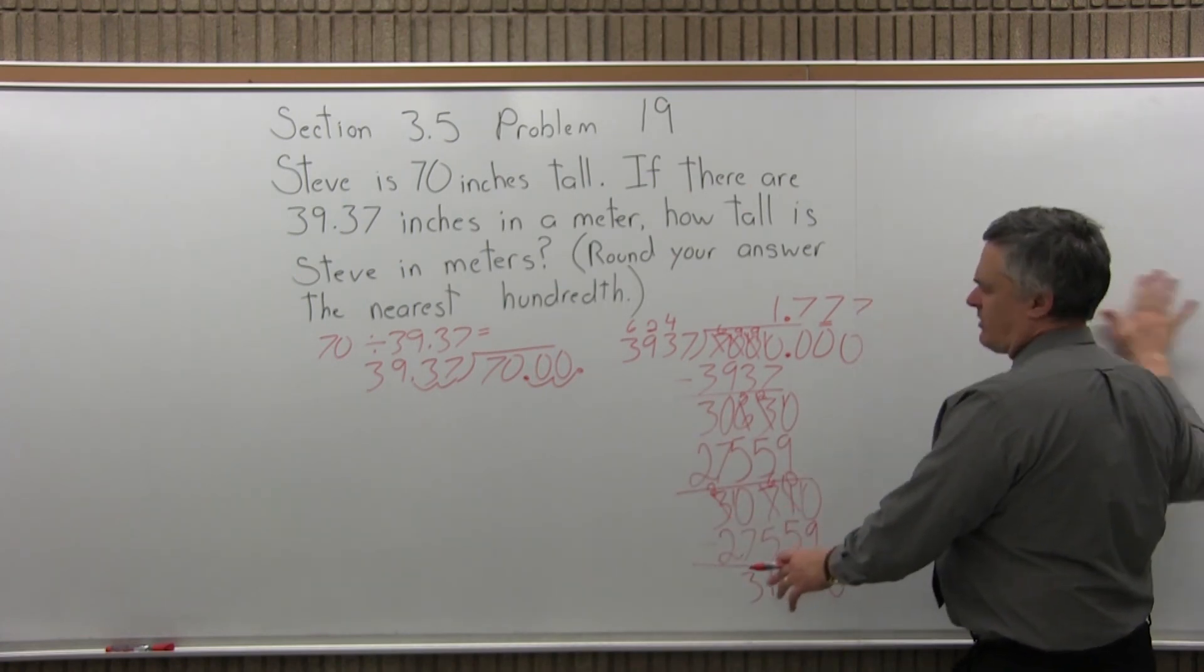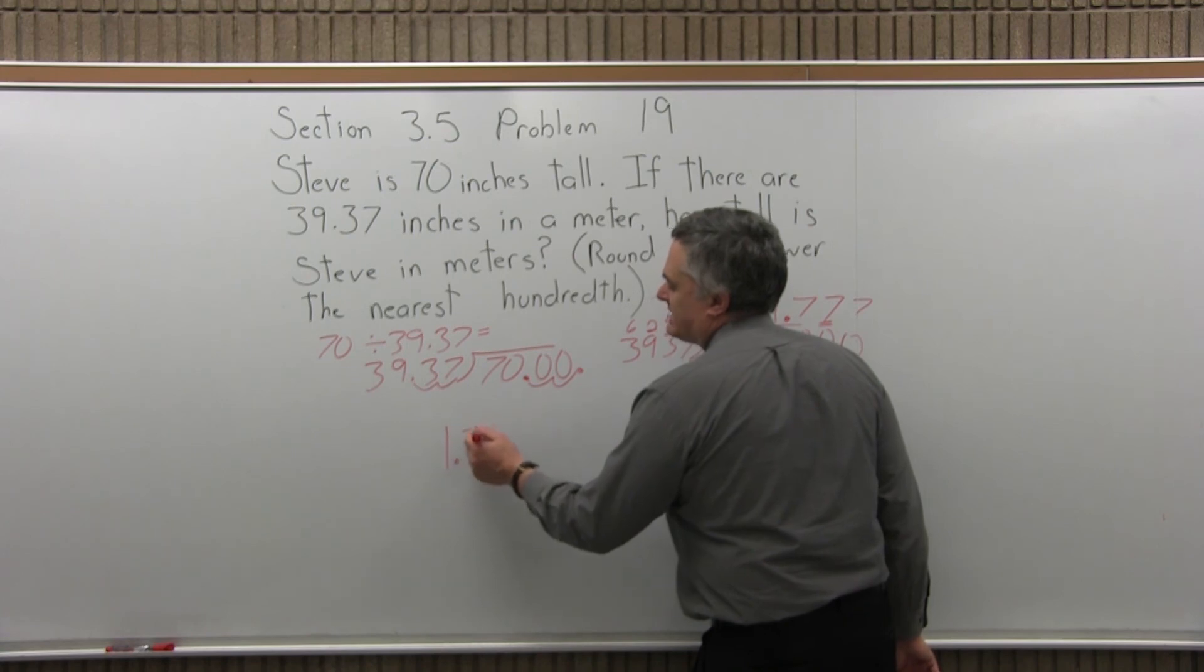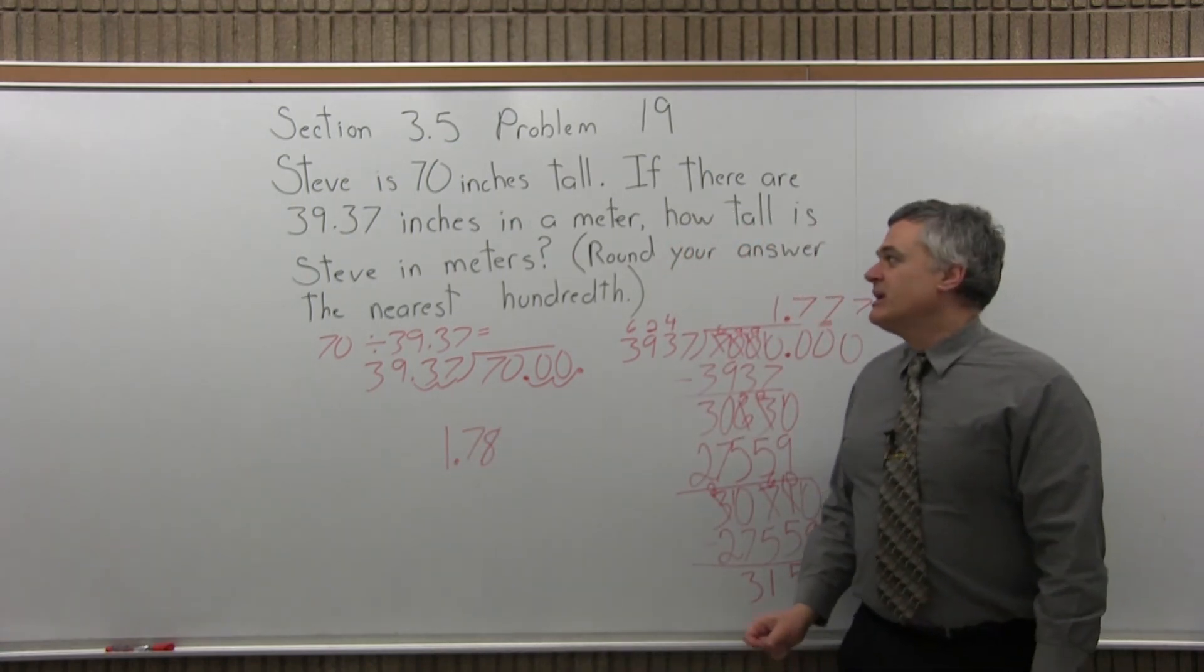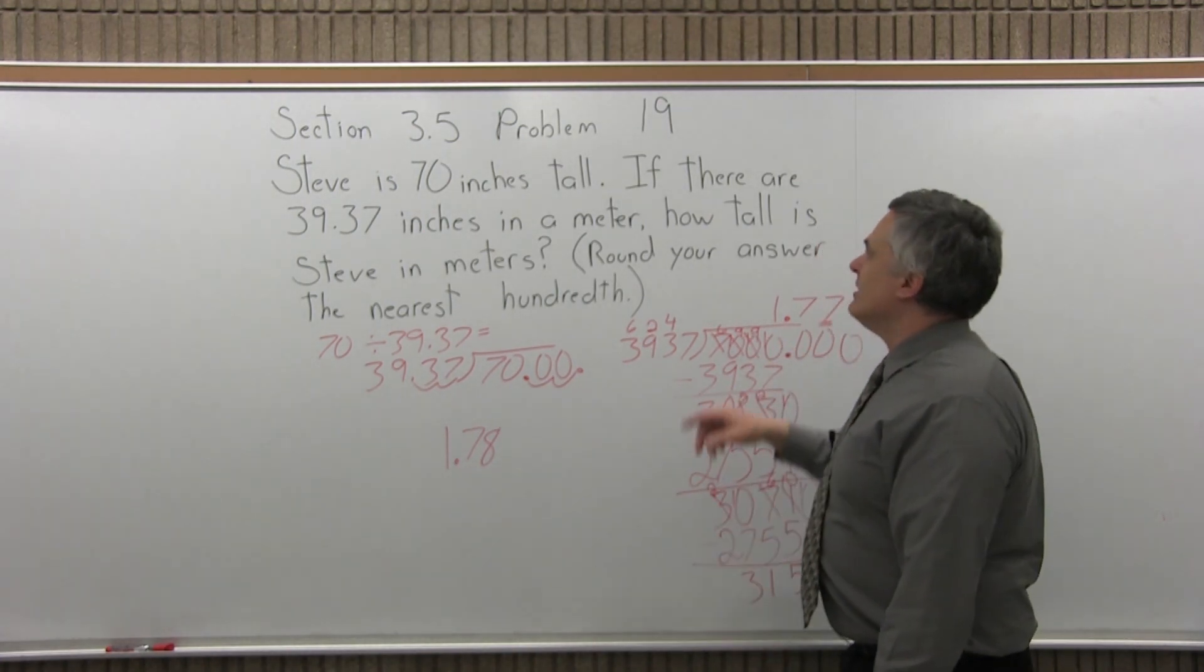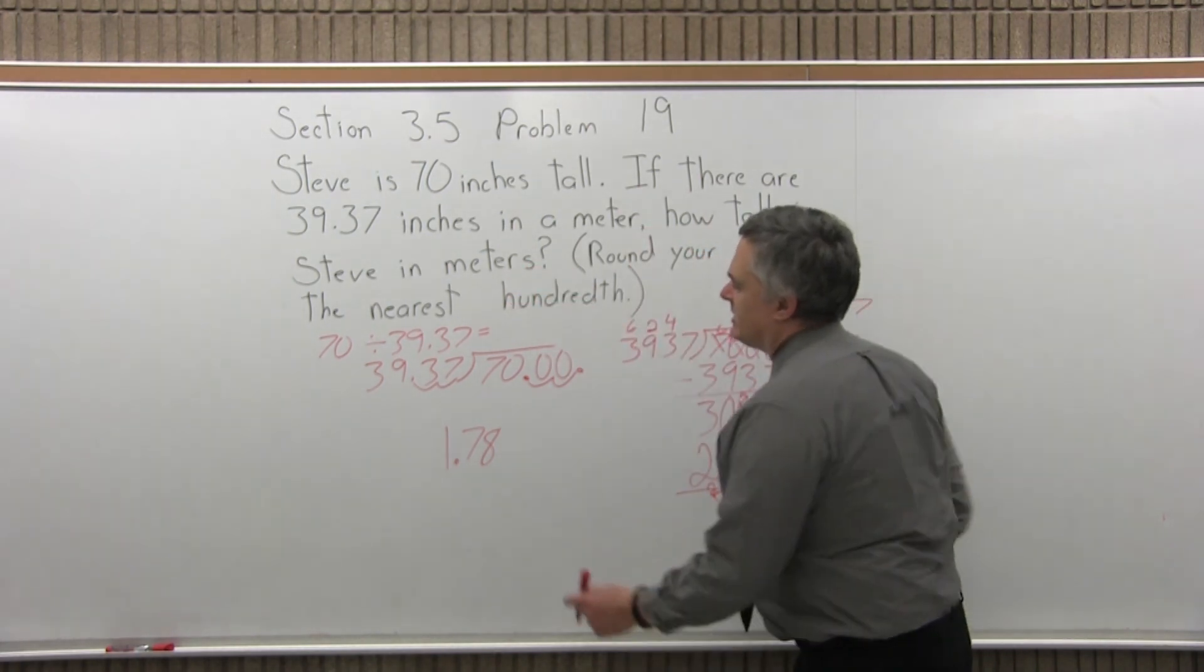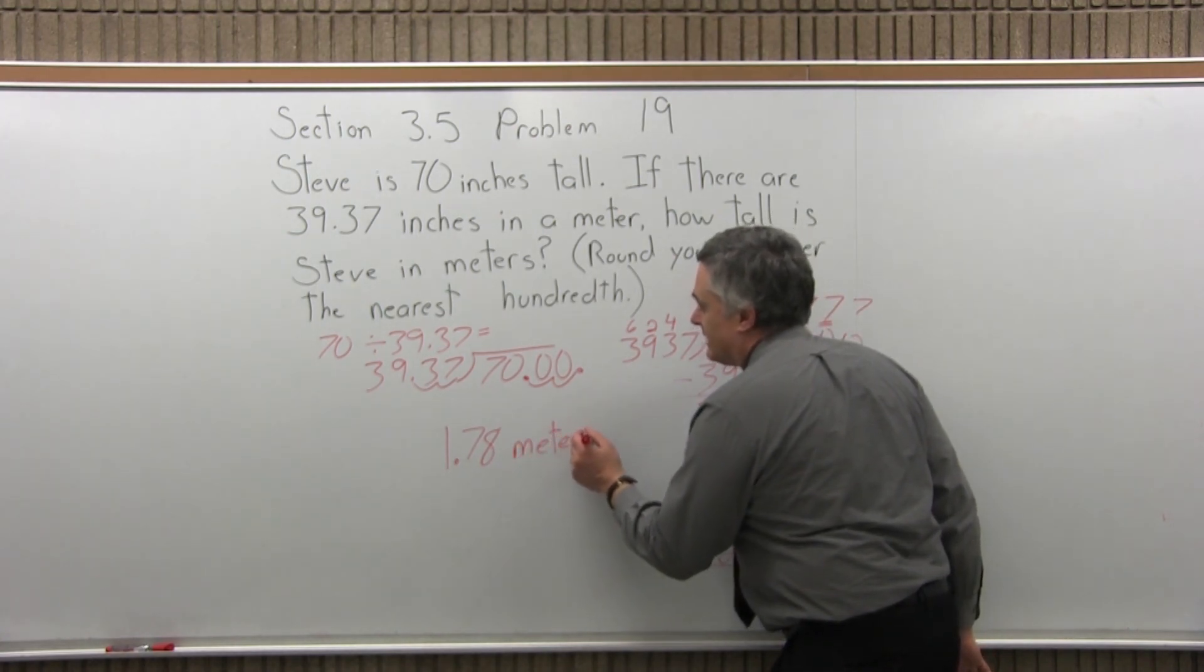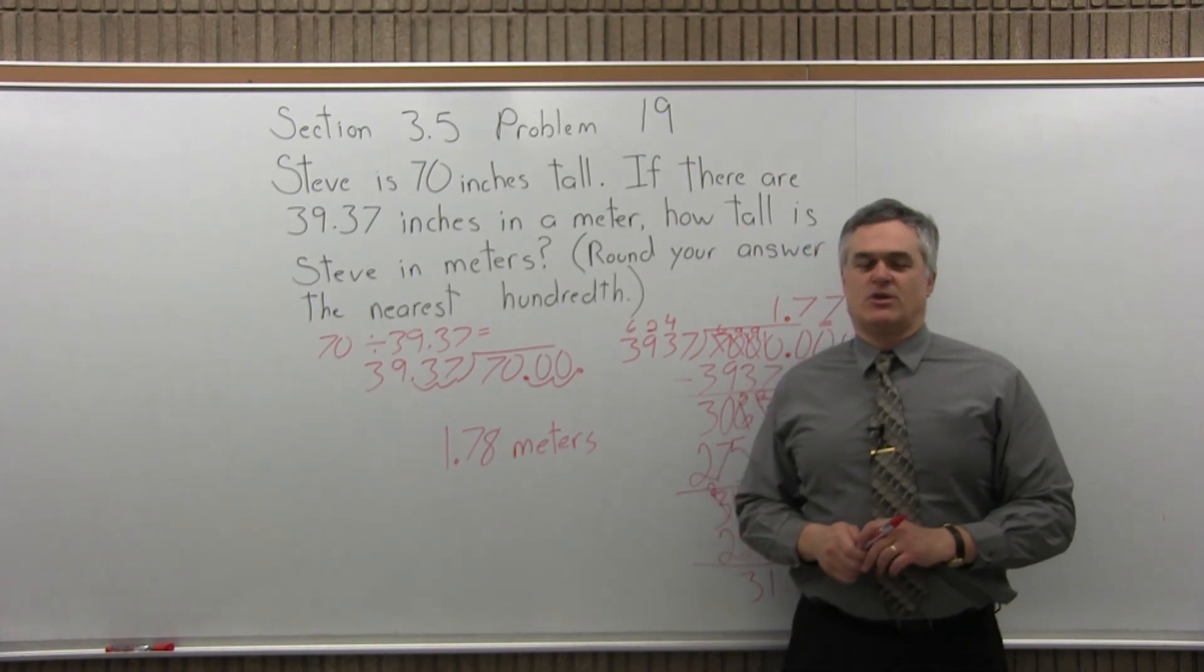Now because this is an application problem and it involves units of measure, I can't just leave a number. I can't say 1.78. The question was how tall is this guy Steve in meters? So the answer is 1.78 meters. If Steve is 70 inches tall, that means he's 1.78 meters tall also.